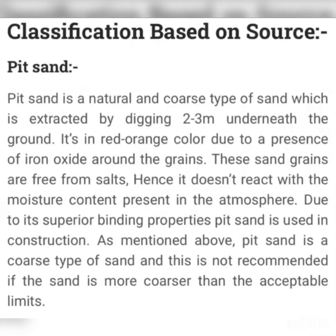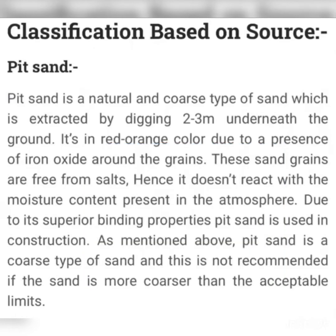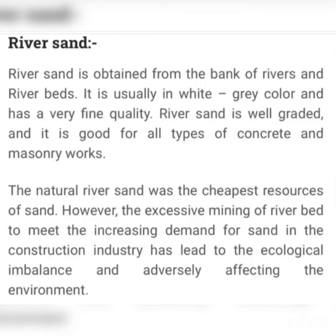Pit sand is a natural and coarse type of sand which is extracted by digging two to three meters below the ground level. The color of pit sand is red-orange, which you can identify by color itself. Pit sand can be used for brickwork construction, but if it is coarser than natural occurrence, it is not recommended even for brickwork.